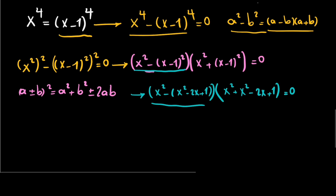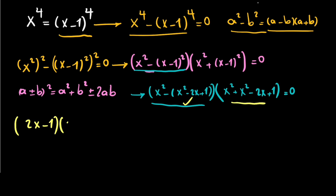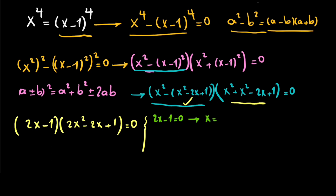Simplifying the first factor gives 2x minus 1, and the second factor gives 2x squared minus 2x plus 1. So we have two cases. The first case: 2x minus 1 equals 0, so x equals 1/2. That is one correct answer.